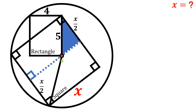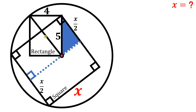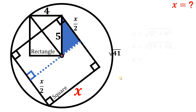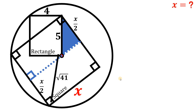Now the only problem is we don't know the length of this segment, or the radius of this circle. But take note: we can use the rectangle to find the radius. Using the Pythagorean theorem, let's call this c. So c equals the square root of 5 squared plus 4 squared. 5 squared is 25, 4 squared is 16, and 25 plus 16 is 41. Therefore the length of this piece, and also the radius of our circle, simply equals the square root of 41 units.